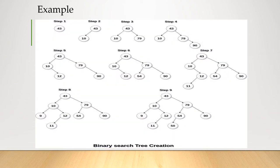Now let us see binary search tree creation. Step 1: insert 43 — this is the first value. Step 2: insert 10 into the binary search tree; as this is smaller than 43, it is placed at the left side. Step 3: insert 79; it is greater than root node 43, so it is inserted at the right side.